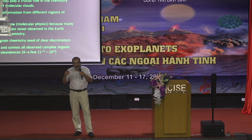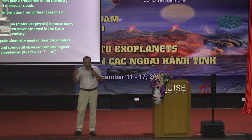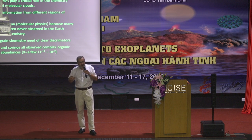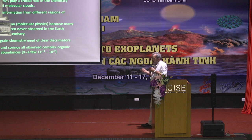The radicals C4H, C5H, C6H, C7H, and C8H were detected and characterized in space before they were detected in laboratories. The abundances we expect for all these complex molecules are around 10^-9 to 10^-11, and for a few cases 10^-8.